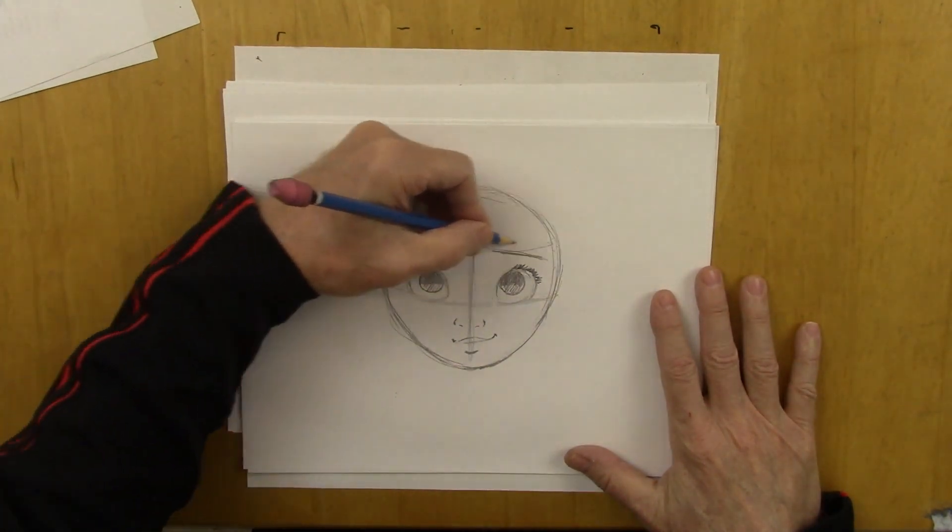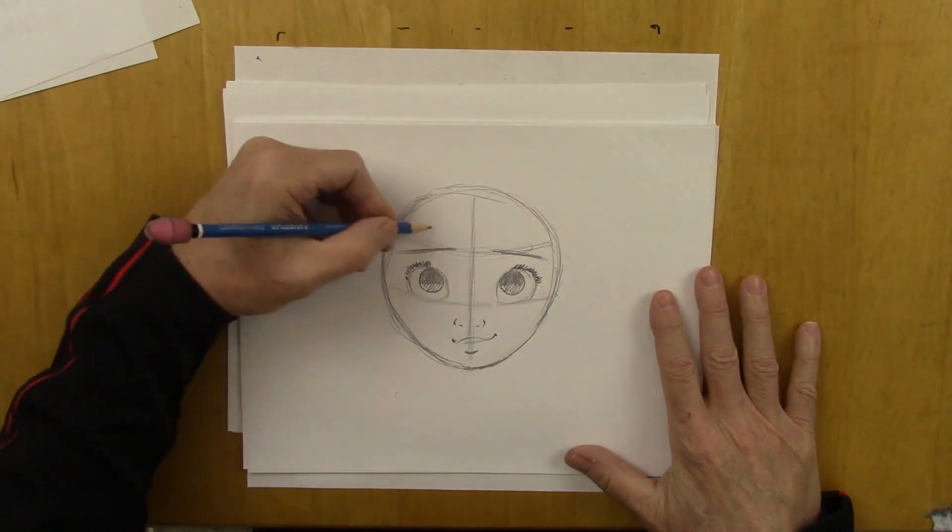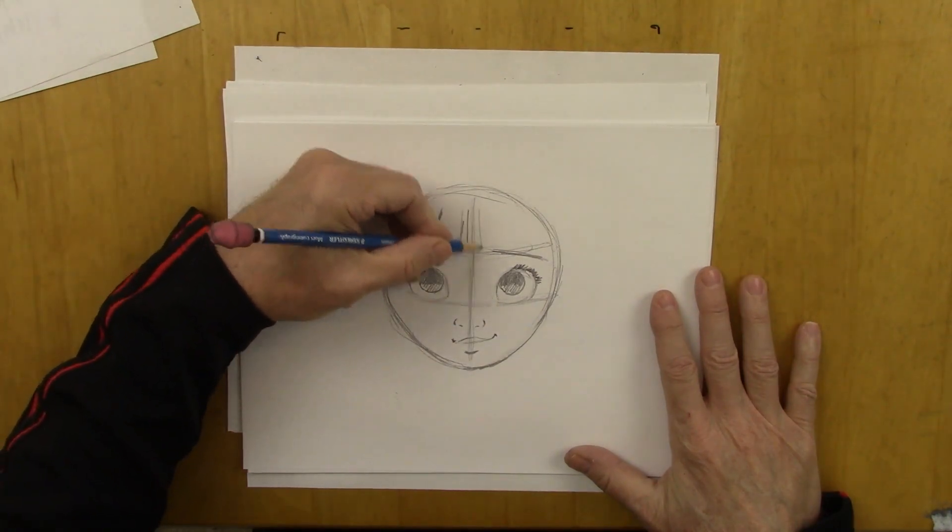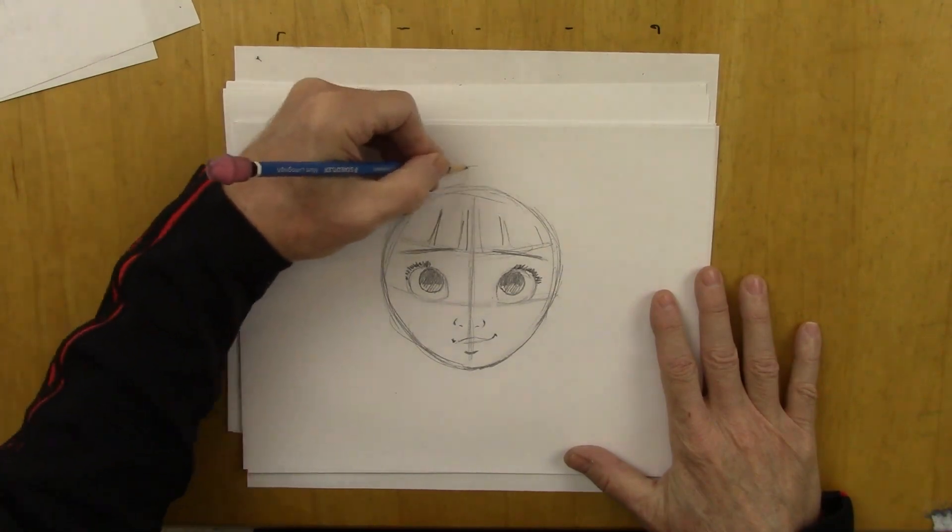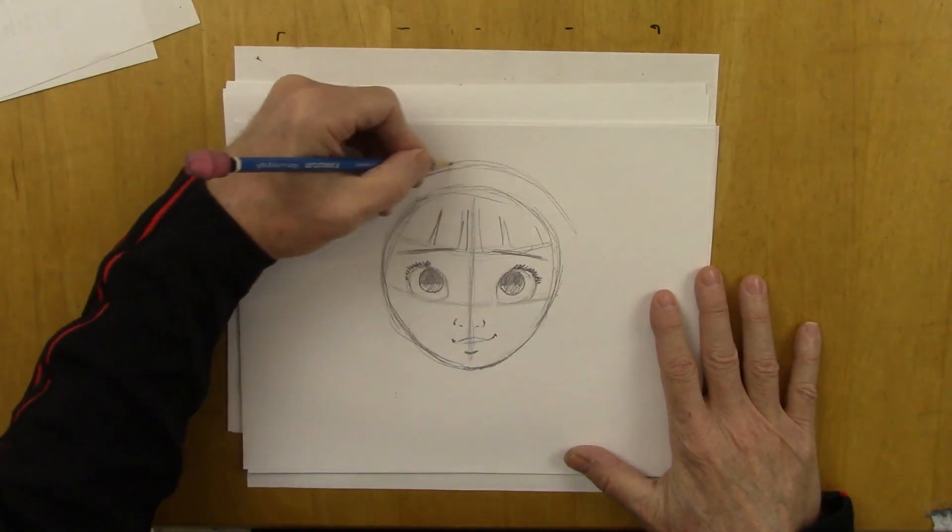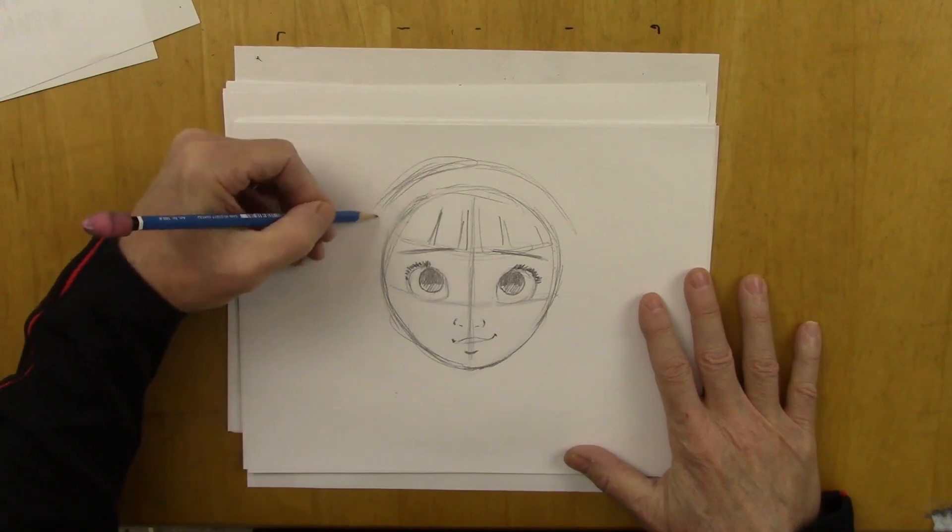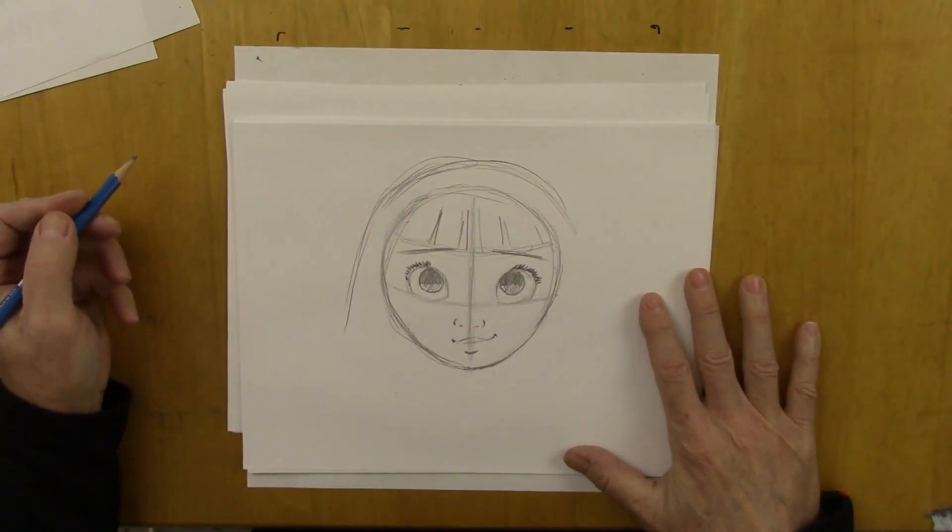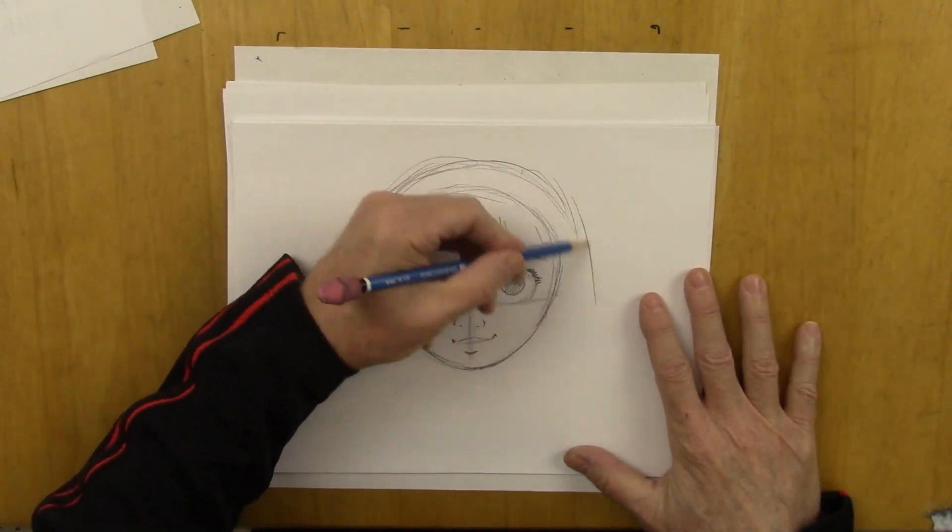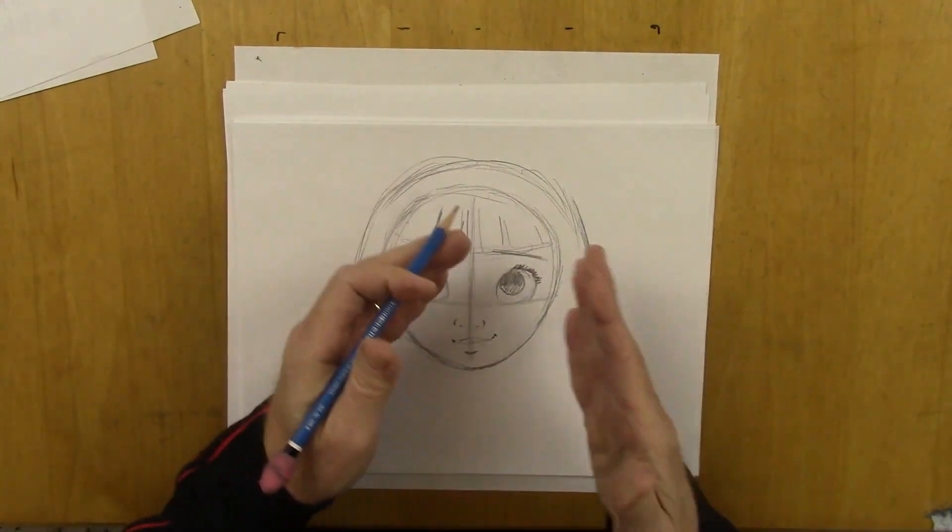And now let's give her some bangs right here. Some hair. And we're going to bring the hair way up here. This is going to add some mass to the head. Bring it down here. And I'll slow down for you. It's going to go out like that.